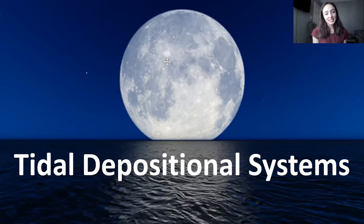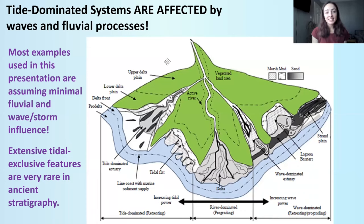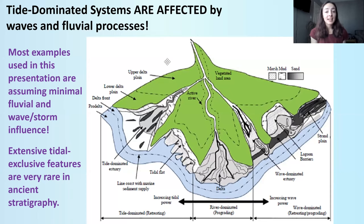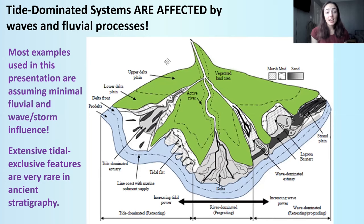Hi everyone! Today we're going to be going over tidal depositional systems. First, just a disclaimer: tide-dominated systems are affected by both wave and fluvial processes, and so as we're talking about the tidal-caused sedimentary structures and stratigraphy that can occur in tide-dominated areas, remember that most examples used in this presentation are assuming minimal fluvial and wave influence. Know that all of these tidal-exclusive features are very rare in ancient stratigraphy, but when you do see them, they're very helpful for determining depositional environment. So let's get into the lecture.